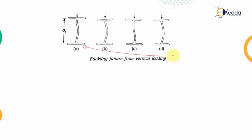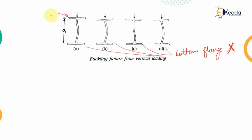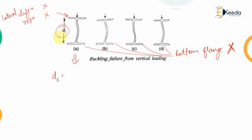In all four conditions, the bottom flange is completely restrained — no rotation or deflection is allowed. In the first condition, the top flange is also not allowed any lateral deflection or rotation, meaning both ends are completely fixed. For this case, the effective depth DE is taken as D1/2. In the second condition, the top flange position is constant but rotation is allowed — no lateral deflection but rotation is permitted. Here the effective depth is taken as 2D1/3.